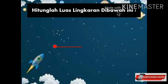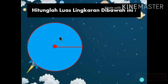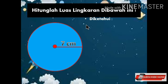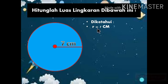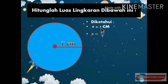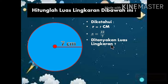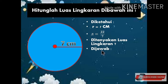Hitunglah luas lingkaran di bawah ini. Sebuah lingkaran memiliki jari-jari 7 cm, maka berapakah luas lingkarannya? Kita hitung bersama-sama, perhatikan. Diketahui: R = 7 cm. Karena jari-jarinya 7 cm merupakan kelipatan 7, maka π yang kita gunakan adalah 22/7. Yang ditanyakan adalah: berapakah luas lingkaran tersebut?